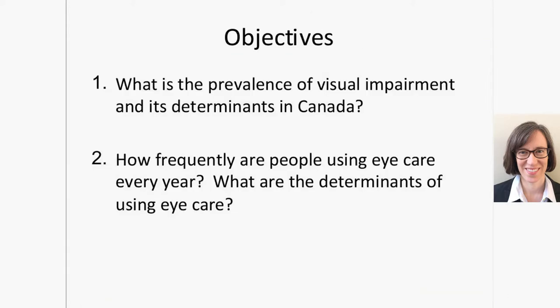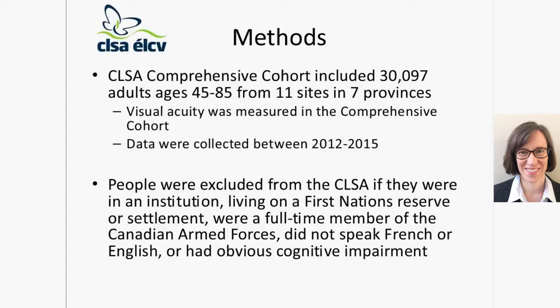My objectives were to look at the prevalence of visual impairment and its determinants, and to determine how frequently people were using eye care and what were the determinants of using eye care. For this work, I used the comprehensive cohort of the CLSA, which included over 30,000 adults ages 45 to 85 from 11 sites in seven provinces. The reason we used the comprehensive cohort instead of the tracking cohort was that visual acuity was measured there. These data were collected between 2012 and 2015.